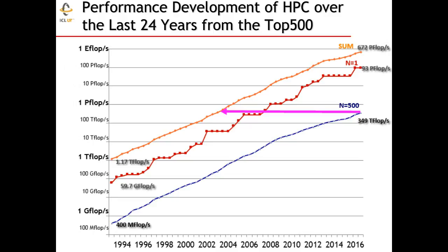That's a striking thing in itself — we have this exponential effect in the performance of our machines, with great changes in a short period of time. A machine at position number one falls basically off the list in six to eight years. An investment in a number one machine usually comes with a price tag of around $200 million. After six years, that computer basically isn't considered a supercomputer anymore and needs to be replaced.